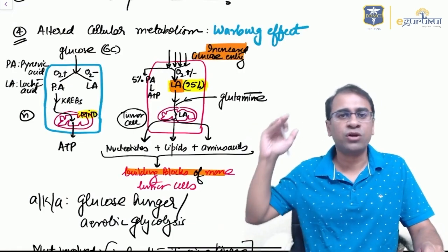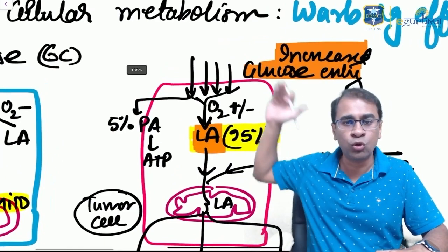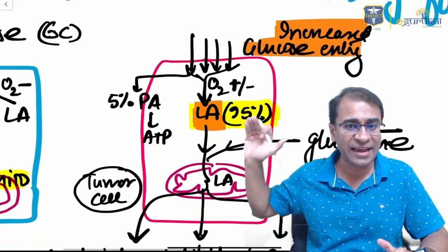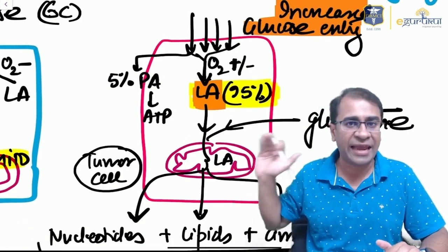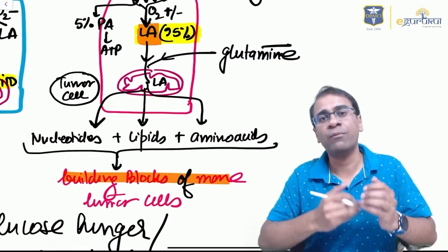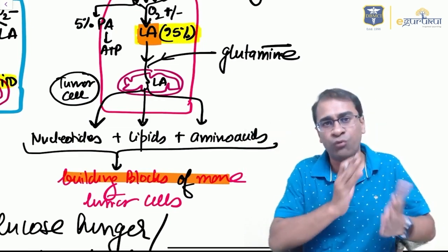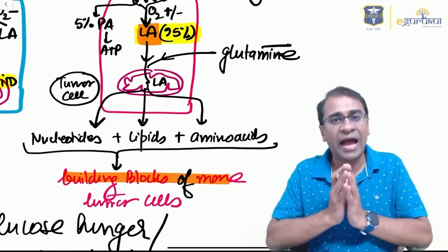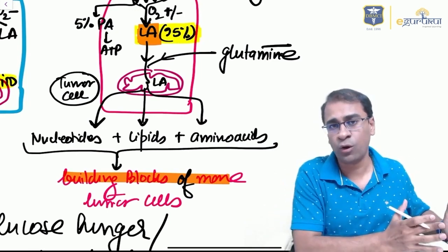Another important point is the Warburg effect. In Warburg effect, glucose enters the cell and every glucose is converted to lactic acid. The lactic acid goes to mitochondria and is converted to nucleotides, lipids, and amino acids to make more and more tumor cells. This unique effect is called Warburg effect. Because it requires glucose only, it's glucose hunger. Because it doesn't require oxygen, it's called aerobic glycolysis—it makes lactic acid even in presence of oxygen.